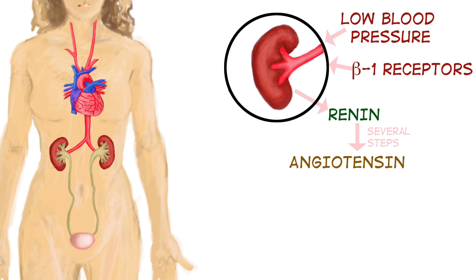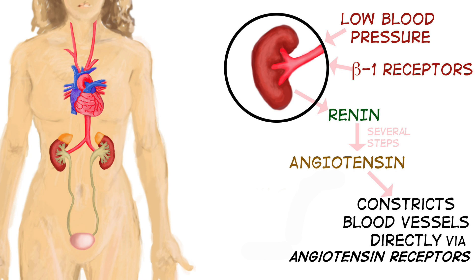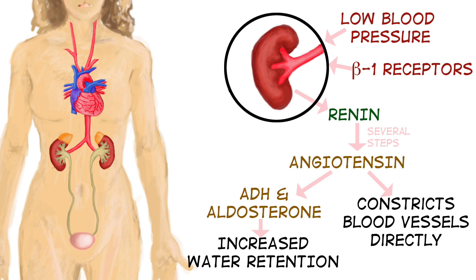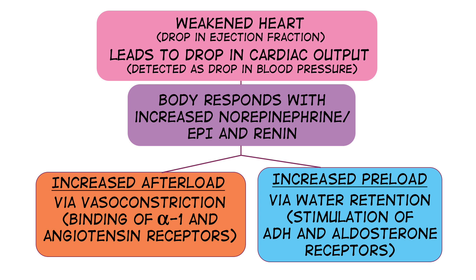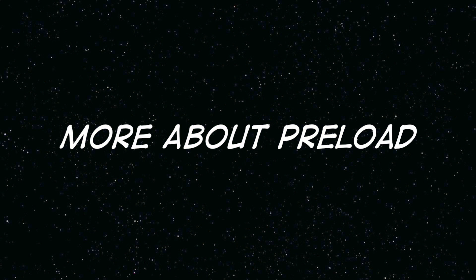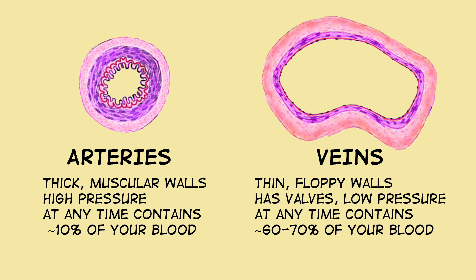There are also beta-1 receptors in the kidney that stimulate the production of renin. Renin promotes the production of angiotensin, which is activated in the lungs. Activated angiotensin is its own vasoconstrictor, working through angiotensin receptors — separate from the sympathetic receptors. Angiotensin in turn increases aldosterone and ADH. Both aldosterone and ADH increase fluid retention, raising blood volume. So a drop in cardiac output leads to increased afterload — due to vasoconstriction from angiotensin and alpha-1 receptors — and increased preload — due to ADH and aldosterone stimulating fluid retention.